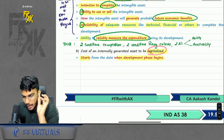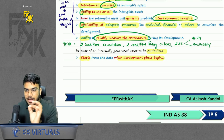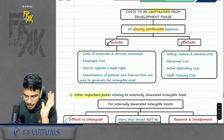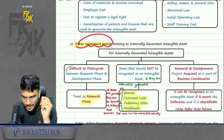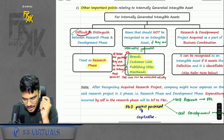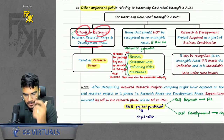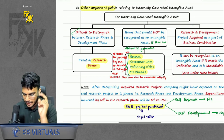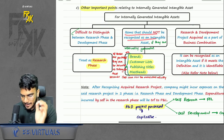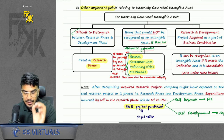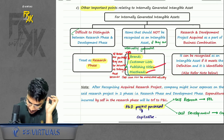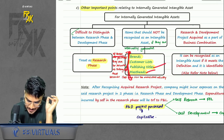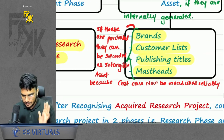One clarification: under the development phase also, you will not capitalize all expenses — you will capitalize only the directly attributable expenses. Additionally, some items should not be recognized as intangibles if they are internally generated: brands, customer database, publishing titles, mastheads. But if these intangibles were purchased, then they can be recorded as intangible.